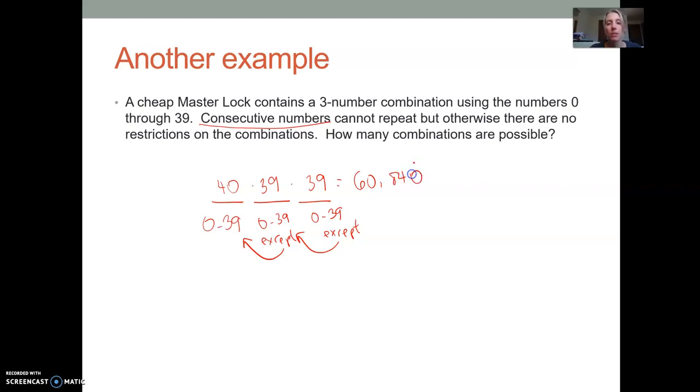So if you buy a master lock and then you lose the combination sheet, you have to try potentially 60,840 combinations until you might finally find the right one. Hopefully it doesn't come to that. It might be worth it just to buy a new one if that does happen.